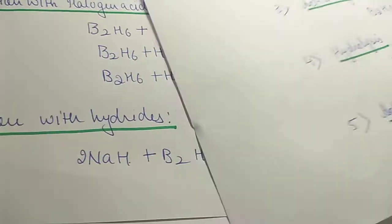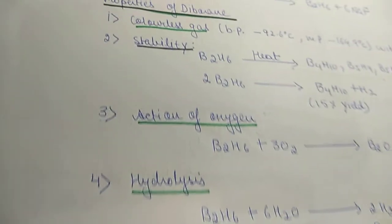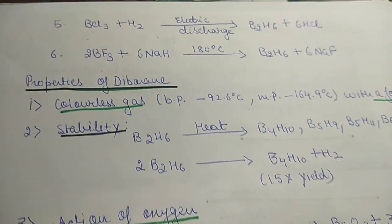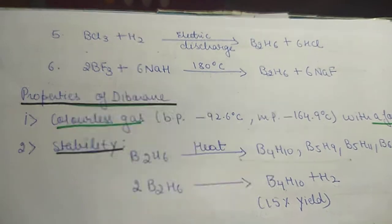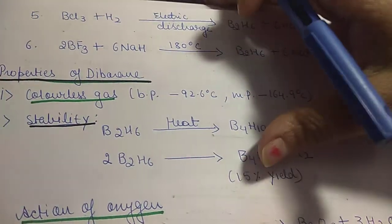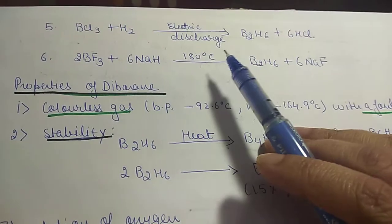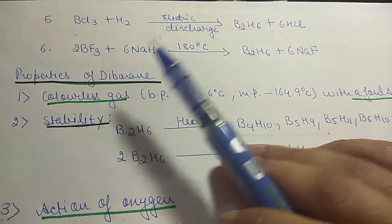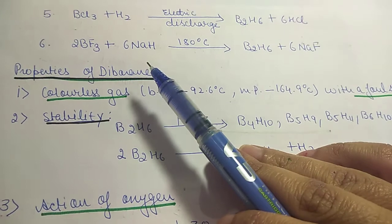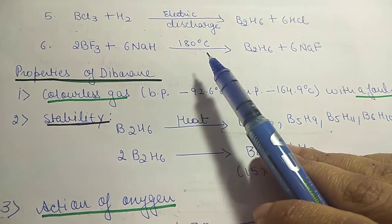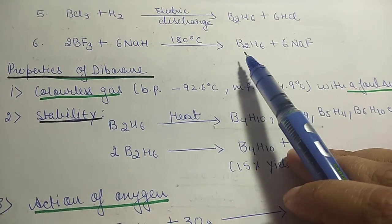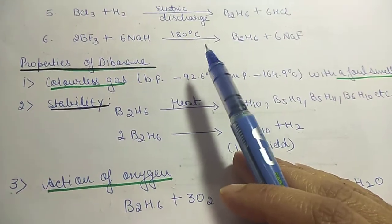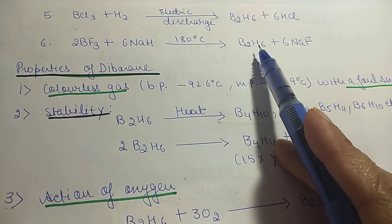The next method of preparation is the action of BCl3: BCl3 treated with hydrogen in the presence of electric discharge gives B2H6 diborane plus HCl. Then BF3 plus sodium hydride at 180 degrees Celsius gives B2H6 and sodium fluoride. These are the methods of preparation of diborane, B2H6.